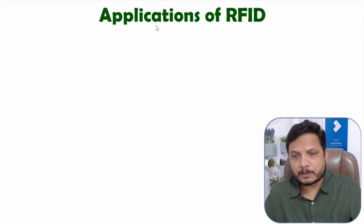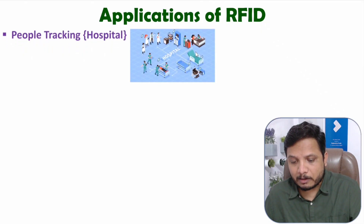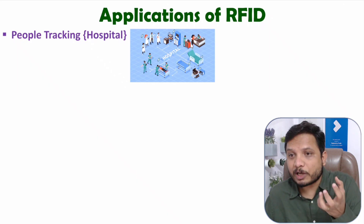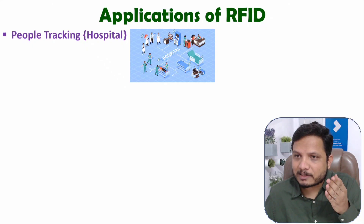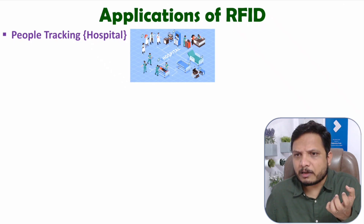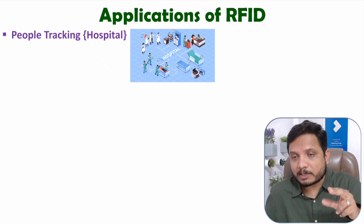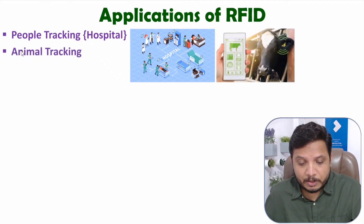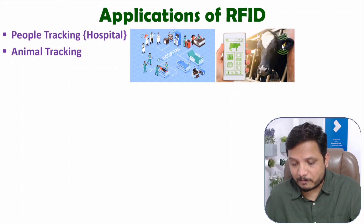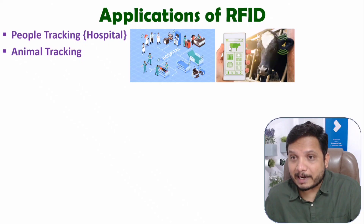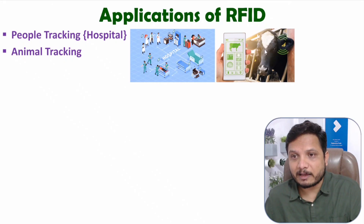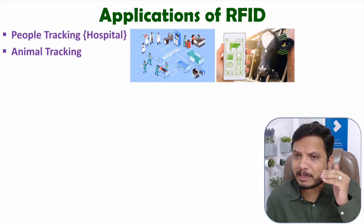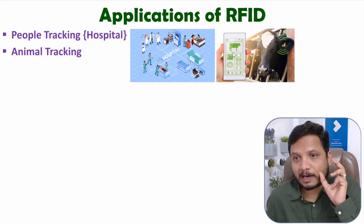Now let me discuss applications. RFID can be used for people tracking. Like in a hospital, one can monitor the location of patients. Many parameters can be translated wirelessly using RFID — like the situation of a patient, heart rate, blood pressure, and more. It can also be used in animal tracking. If you insert an RFID tag inside an animal, its location can be identified and tracked, and health data can be gathered. If you attach some other sensors, that sensor data can also be sent to an application using the RFID tag.